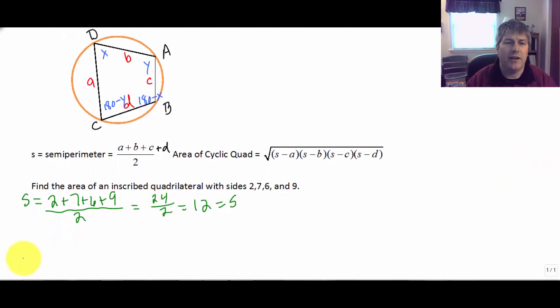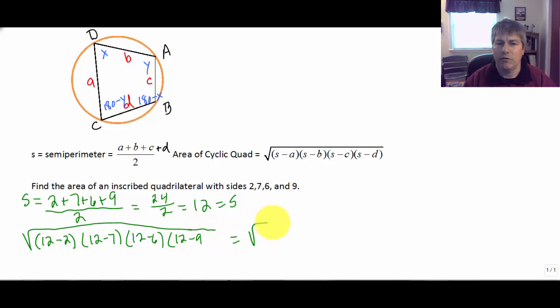So now we want to take the square root of the quantity 12 minus 2 times 12 minus 7 times 12 minus 6 times 12 minus 9. Which equals the square root of 10 times 5 times 6 times 3.